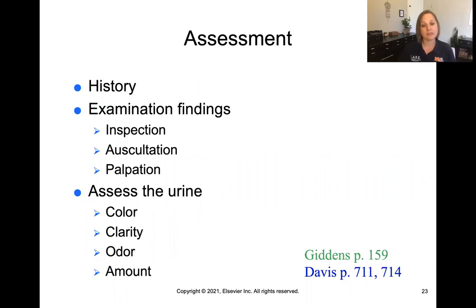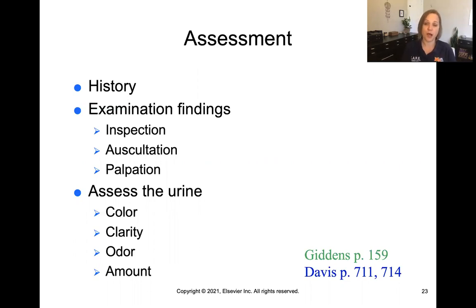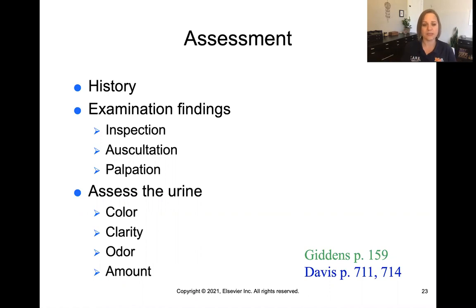For physical examination, the first thing is to inspect — look at the abdomen watching for any distension, and inspect the genitals, looking at the urethral os (opening) for any lesions or redness. You can also palpate; the abdomen should be soft, non-tender, and non-distended. Assess the urine through visualization: look at color, clarity (clear or cloudy), whether there's a strong odor, and the amount the patient is voiding.